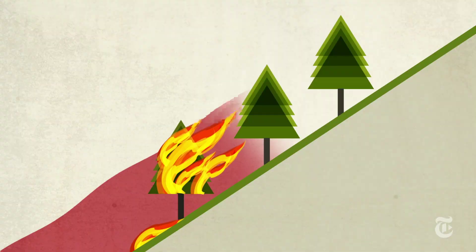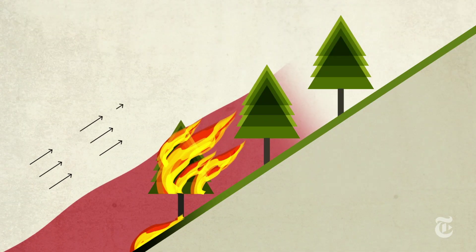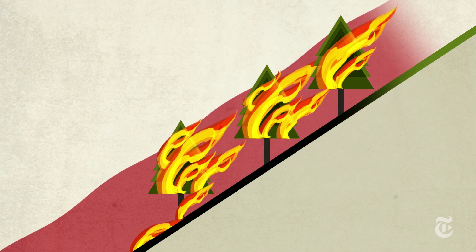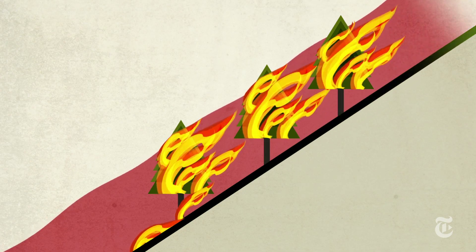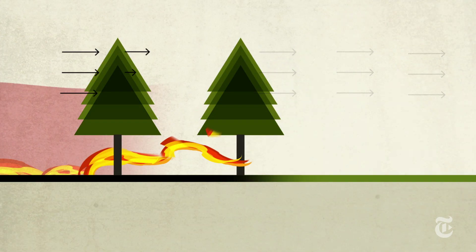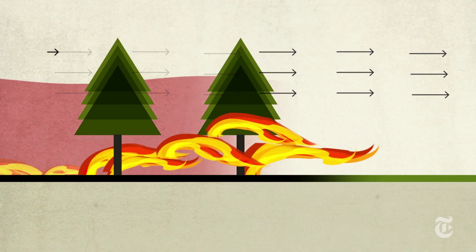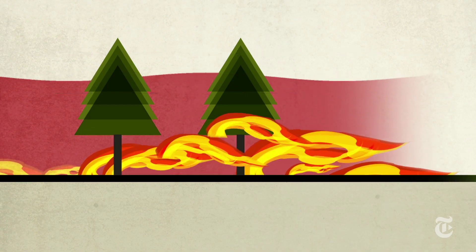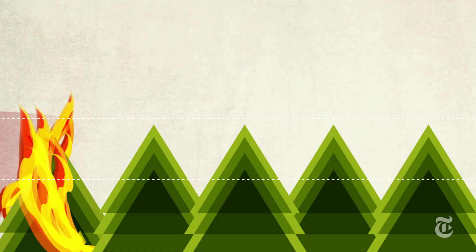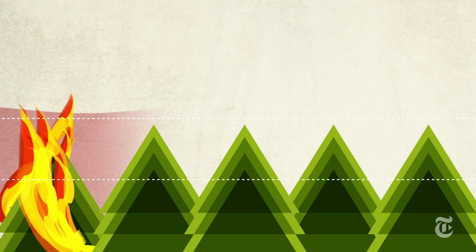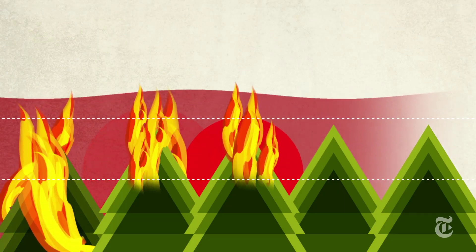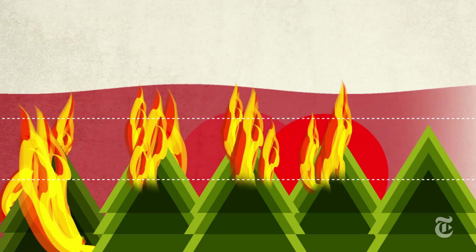Steep terrain helps the fire spread quickly as the hot air rises and heats nearby trees. Wind spreads the heat as well and adds more oxygen to the fire, making it hotter. The forest canopy can get so hot that the fire crowns, or leaps from treetop to treetop.